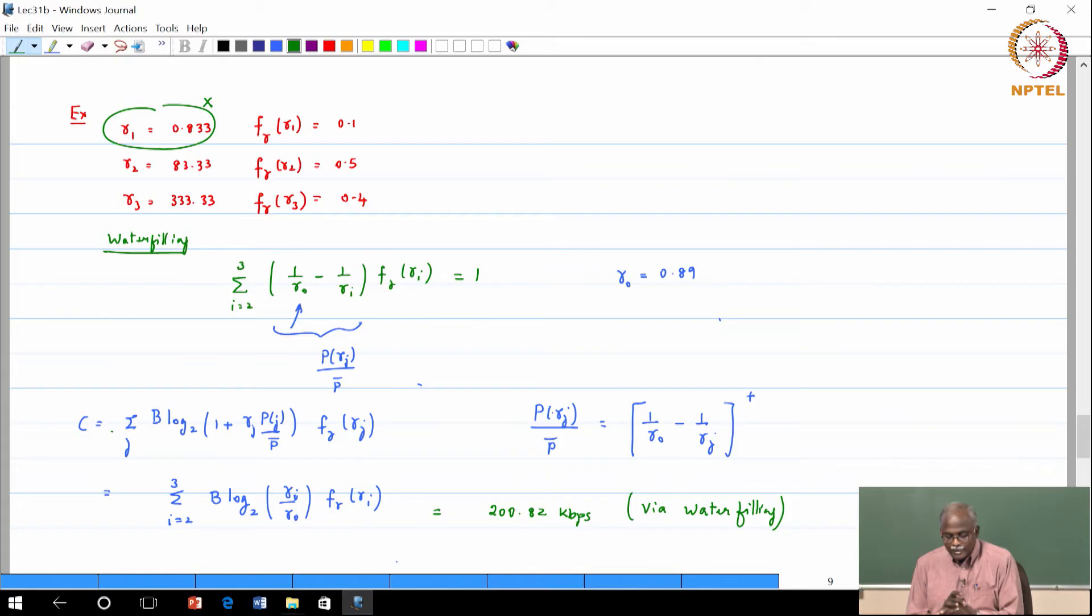Where did the additional gain come from? Because you boosted gamma i by gamma 0, you divided by gamma 0 and gamma 0 is less than 1. So that is effectively like boosting gamma i. That is what you did rather than transmitting power also in the gamma 1 state.